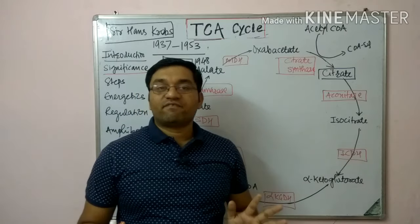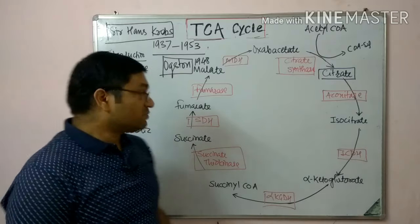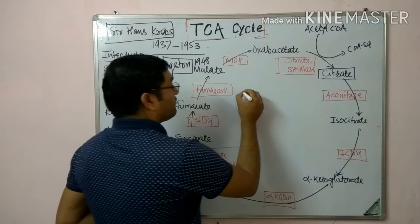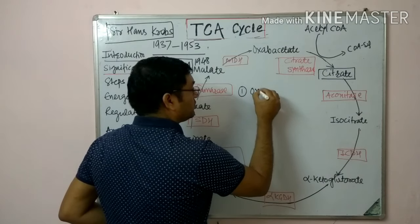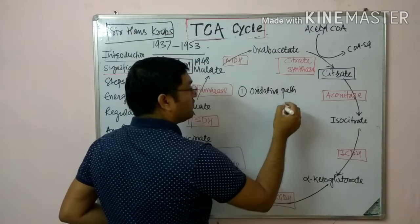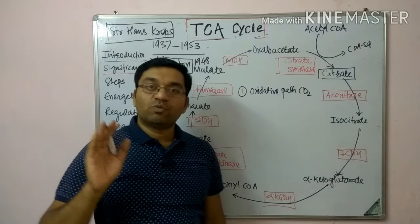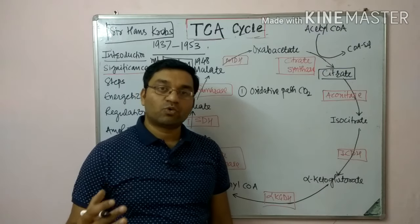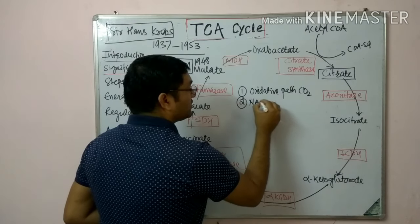This pathway occurs in the mitochondria. Coming to the significance: it is a final common oxidative pathway for oxidation of all foodstuffs — carbohydrate, protein, and fat. The second important point is that it gives reducing equivalents, that is NADH and FADH2.